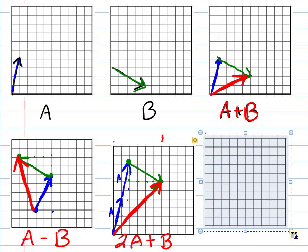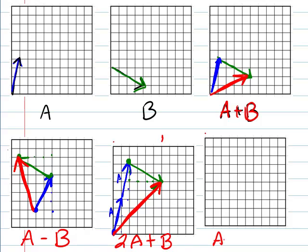For funsies, let's try one more. How about A minus 2B? So let's start somewhere in the middle. Make sure we don't run out of space. Let's start right here. So we've got A. So A is gonna go over one, four up. One, two, three, four. So A goes one over, four up.